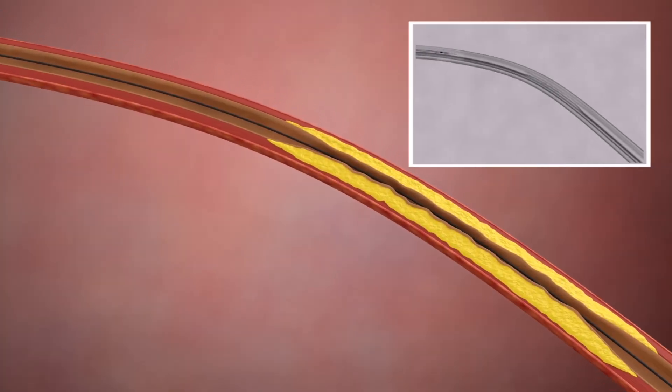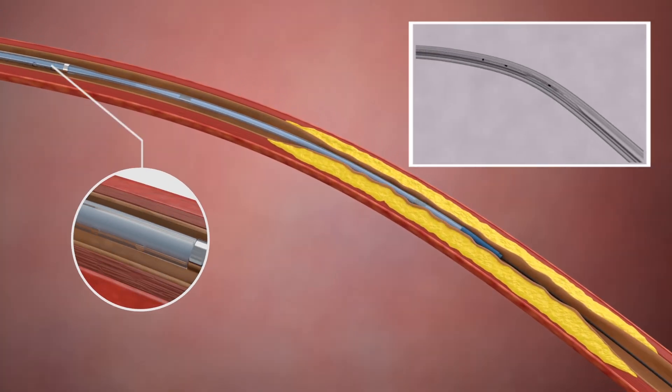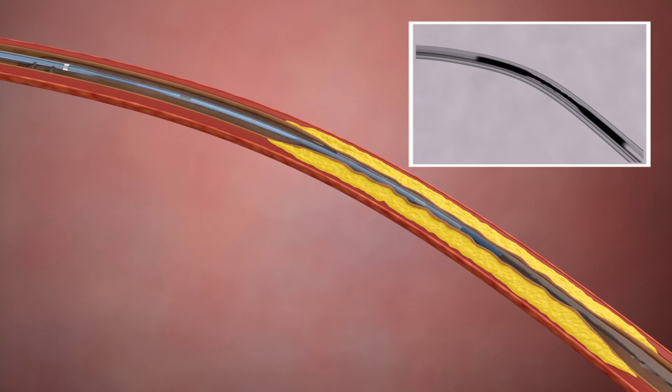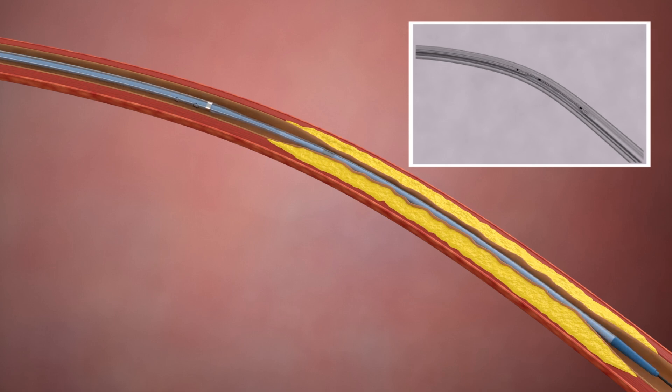Once selectively positioned, contrast can be injected to perform angiography. The guide wire and catheter are manipulated through the occlusive lesion and angioplasty is performed.